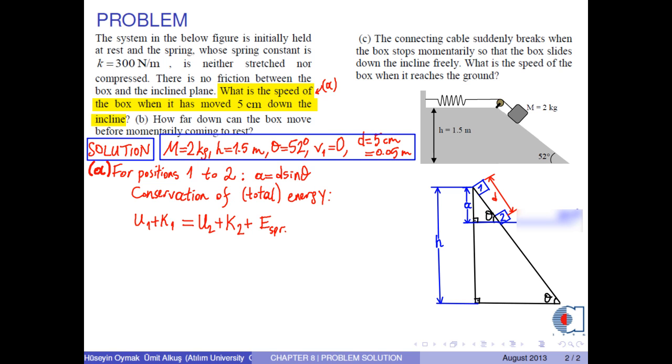Now let us choose position 2 as the zero potential energy level. The potential energy of the box at point 1 becomes M times G times A. The kinetic energy at this point is zero because its initial speed is zero. And the energy stored in the spring at point 1 is zero because it is neither stretched nor compressed.